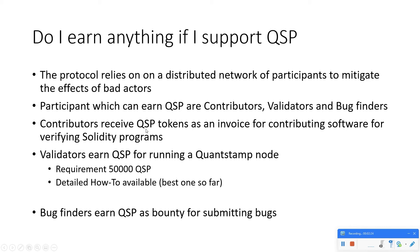A contributor receives QSP tokens as payment for contributing software that verifies Solidity programs, and a validator earns QSP for running a Quantstamp node. Currently, the requirement for running a node is 50,000 QSP, which is roughly about 500 dollars right now. What I like about running a node for Quantstamp is that it's very easy to set up, because the how-to guide available on GitHub is very detailed and explains everything well with pictures and videos.